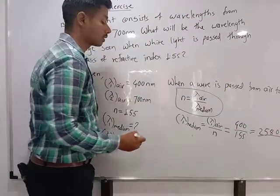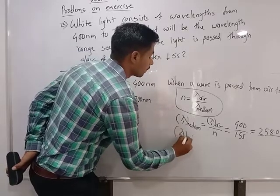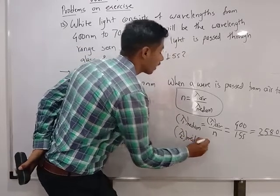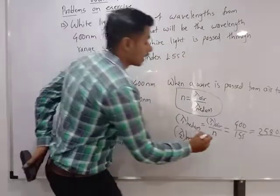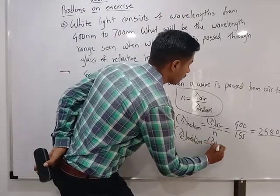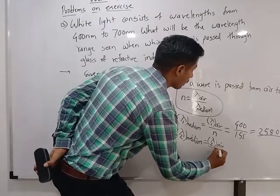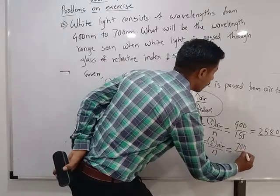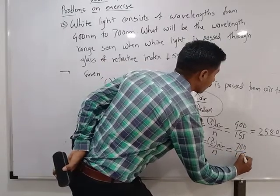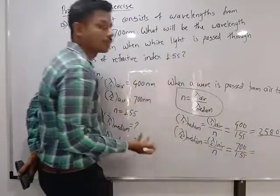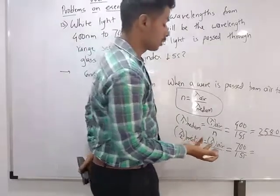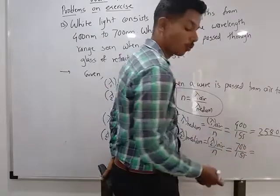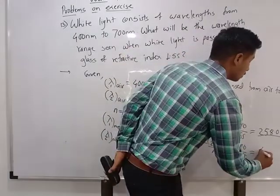Next, we calculate lambda 2 in medium. Lambda 2 in medium equals lambda 2 in air divided by n. That is 700 divided by 1.55. I will put in 1.55 as the refractive index for this step.